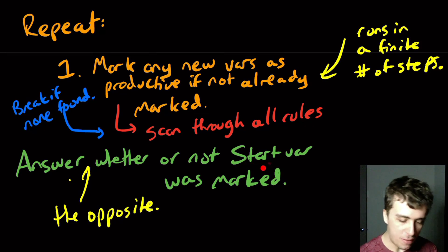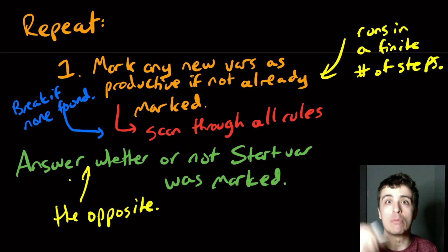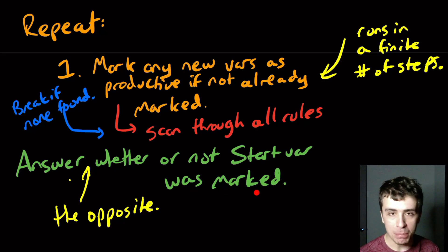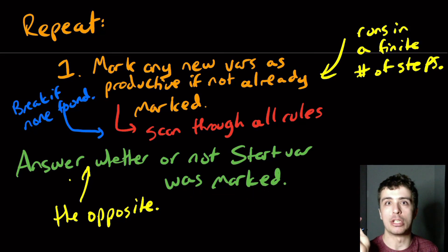answer the opposite, because of the discussion we had earlier. If we found that the start variable was marked, then we should say reject, because we're trying to solve the empty problem. If it was marked, then the language of the grammar is not empty. And if it was not marked, then that means the language of the grammar is empty. And then therefore, we can say, yes, we accept that the language of the grammar really is empty.